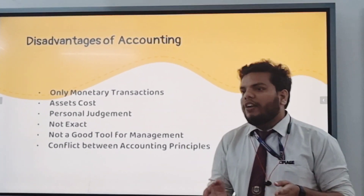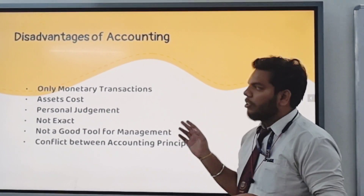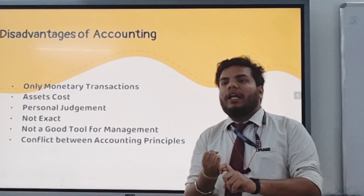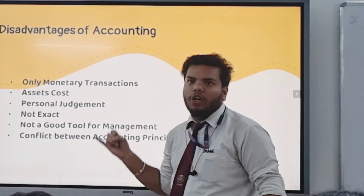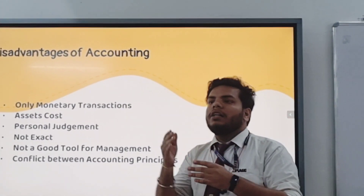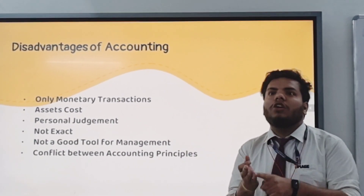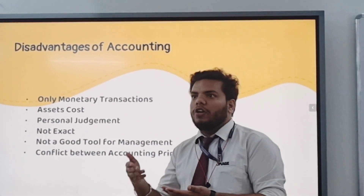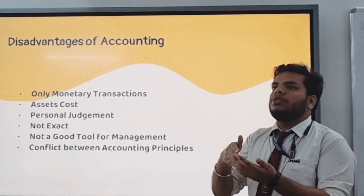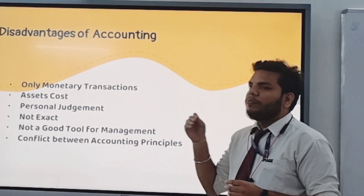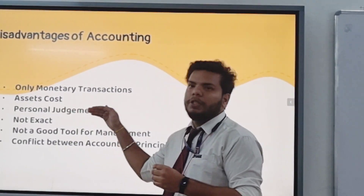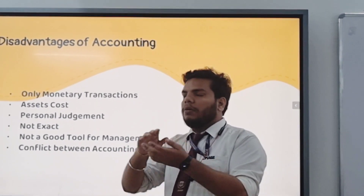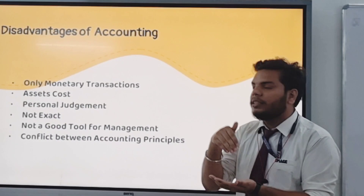Now the disadvantages or limitations of accounting. First: only monetary transactions — accounting records only transactions in which money is involved. Second: asset cost — in accounting, assets are recorded on the basis of their cost, not on the basis of their market price. Third: personal judgment — accountants have various principles of accounting, and an accountant may use principles that others do not follow; it is totally based on the accountant which principle they want to use. Fourth: not exact — accounting is not exact because sometimes a value or a range of prices is used, so we cannot say accounting is always precise.